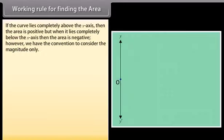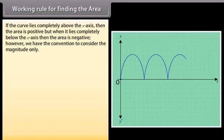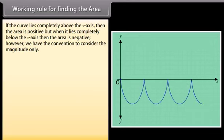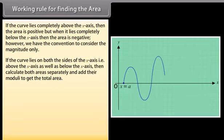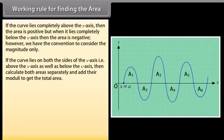If the curve lies completely above the x-axis, then the area is positive, but when it lies completely below the x-axis, then the area is negative. However, we have the convention to consider the magnitude only. If the curve lies on both sides of the x-axis — above as well as below — then calculate both areas separately and add their moduli to get the total area.